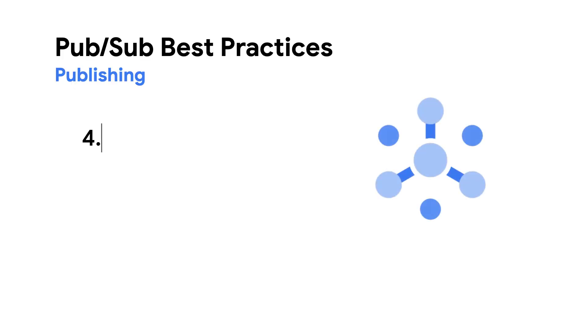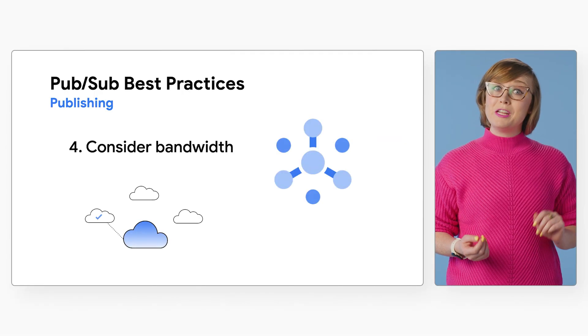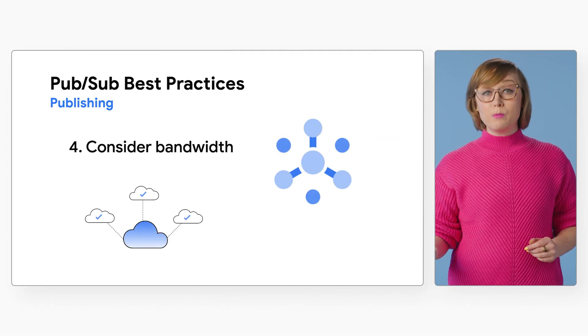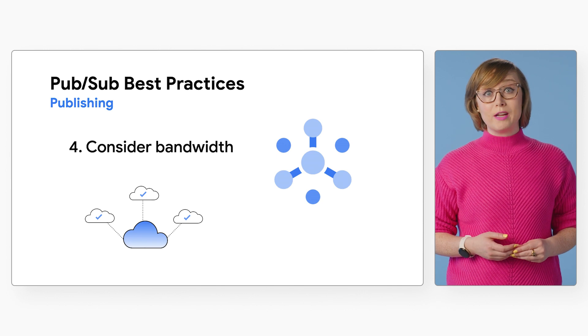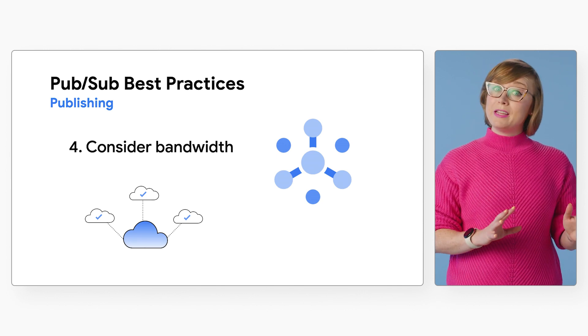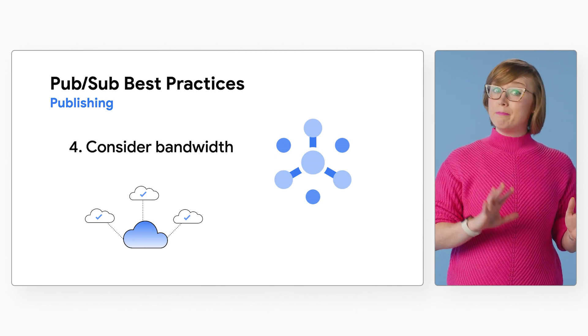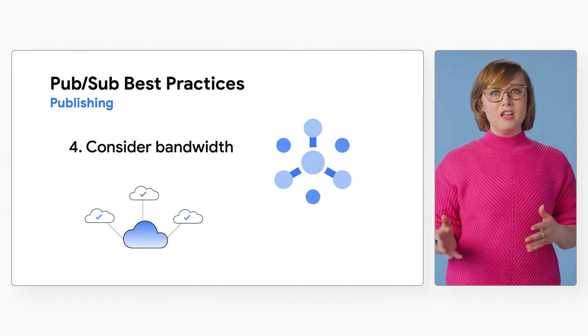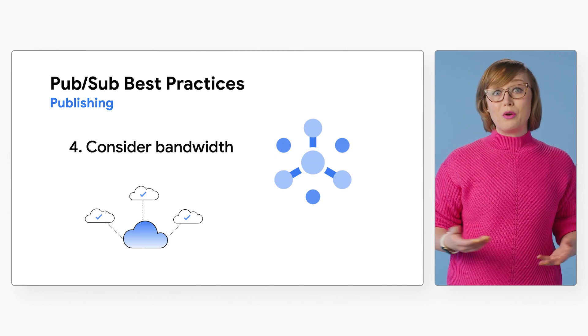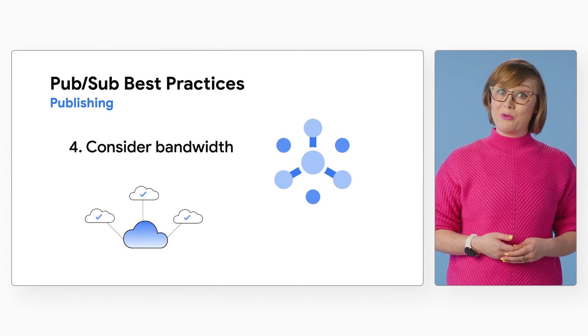Number four: consider bandwidth. Your published throughput is constrained by your network bandwidth, as well as the number of requests you are sending. If your bandwidth is good but your network latency is high, you don't want to overwhelm the system with too many small requests. You can also use publisher-side flow control to help with client-side network issues.